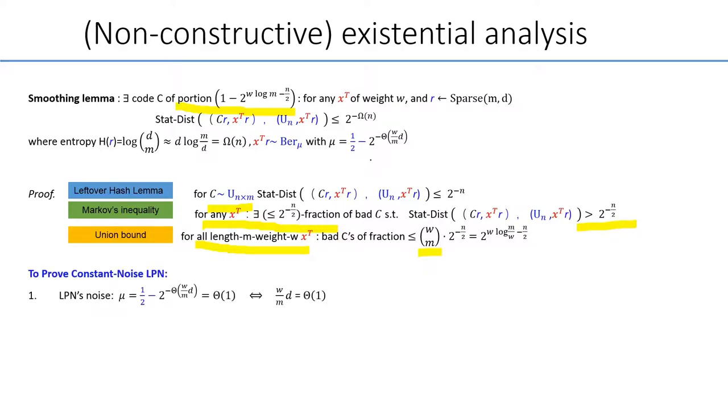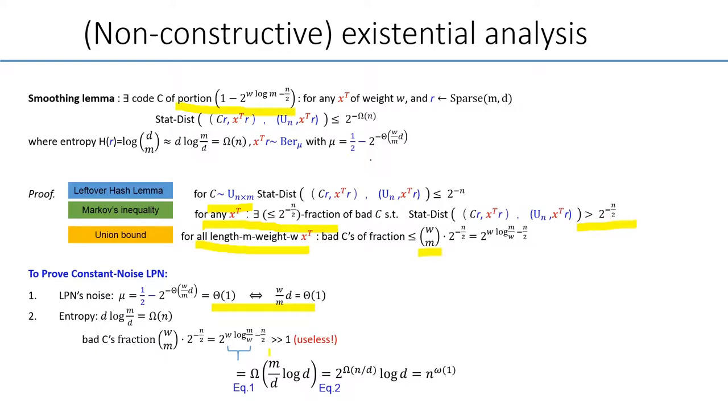So the end goal is to prove that the hardness for the standard LPN, whose noise rate is constant. And we recall the entropy requirement. Then, the bad fraction of the code will be exceeding 1, which is useless. Put it differently.